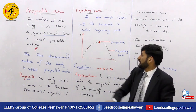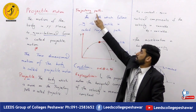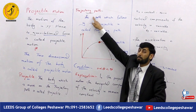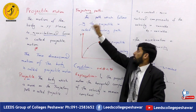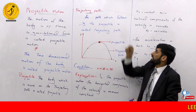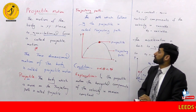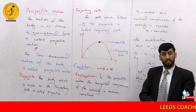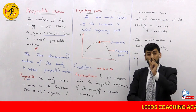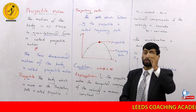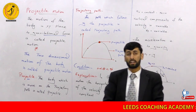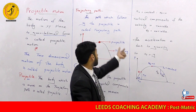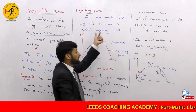The path followed by the projectile is called the trajectory path. The trajectory path is a parabolic path. The parabolic path is the trajectory path of projectile motion.